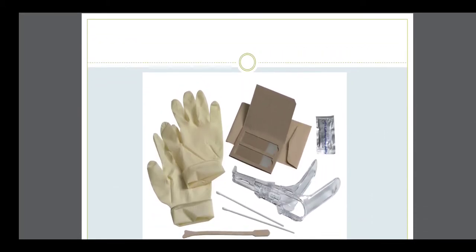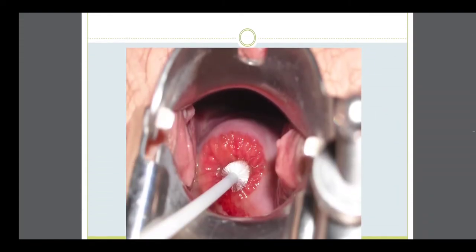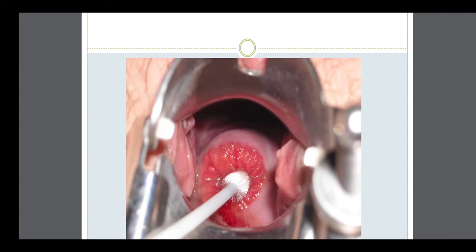The articles required for female reproductive organ examination will be gloves, one speculum, some swab sticks for taking the pap smear, and one brush also required for doing any biopsy. This is the brush which is used to take biopsy.